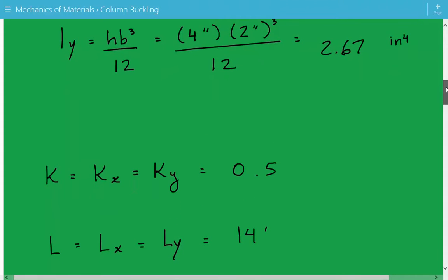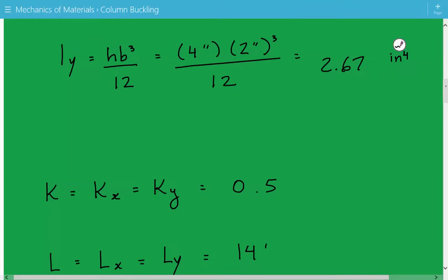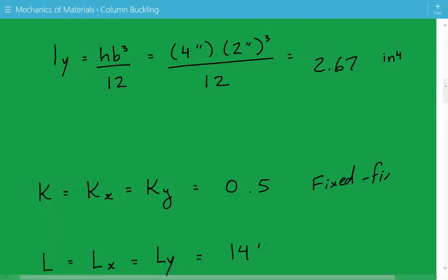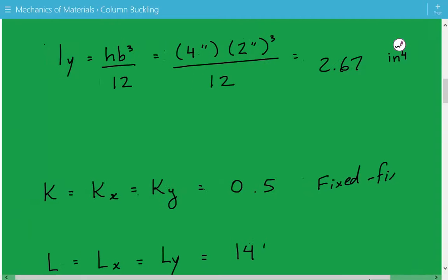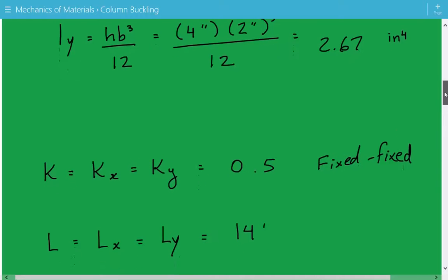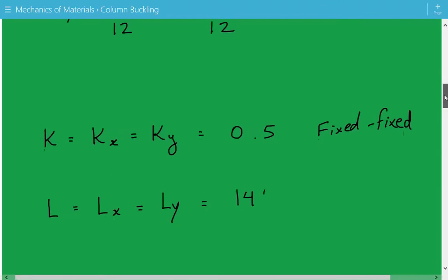The effective length factor K is equal to 0.5 because this is a fixed-fixed boundary condition. The unbraced length for both axes is equal to 14 feet.